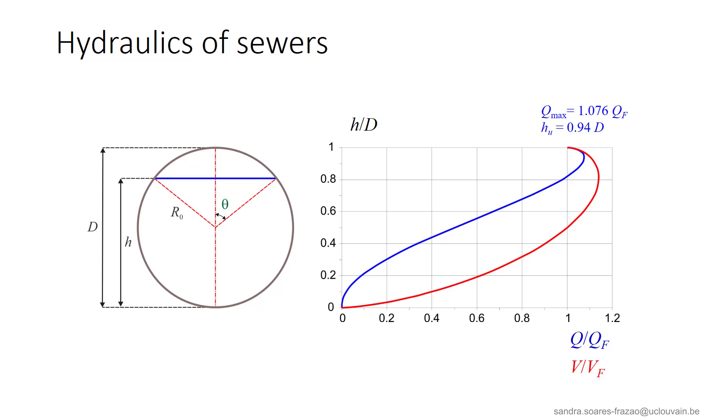We can observe something that is really interesting for urban sewage. When Q is about 10% of Qf, V is about 64% of Vf, and when the discharge is only 1% of the full discharge, V is still 32% of Vf, although Q is very small.